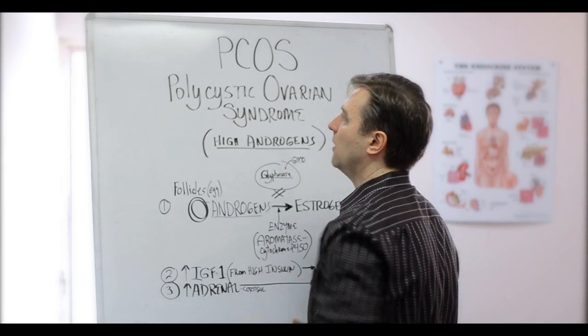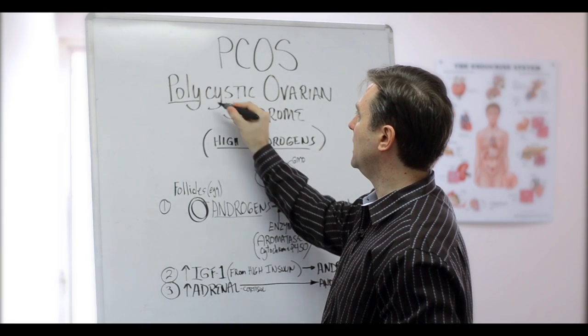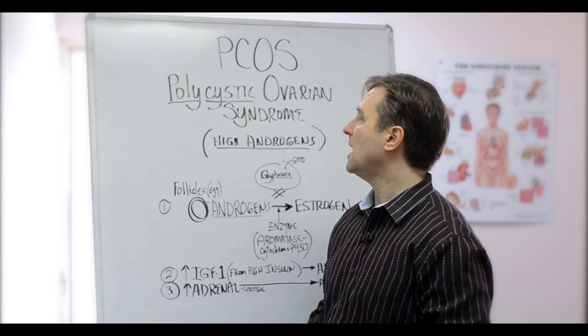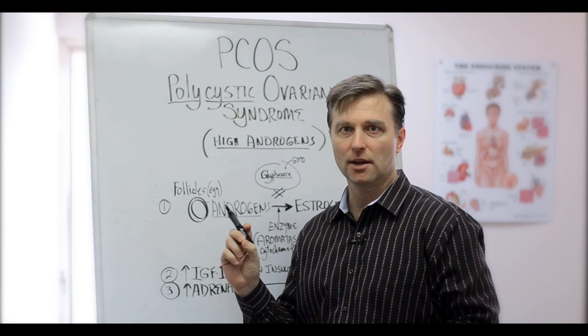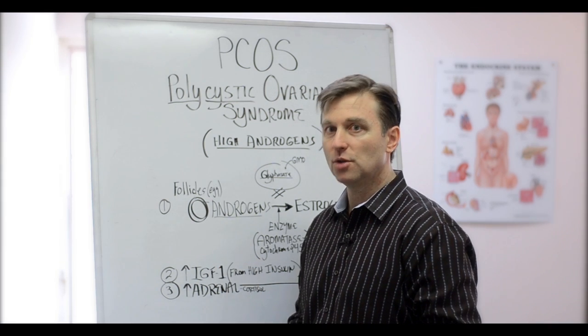The reason why it's hard to find out about this is just because of how it's named. Poly means many, cystic means cyst. In reality, PCOS is not really cyst, it's follicles, which follicles are eggs released by the ovary.